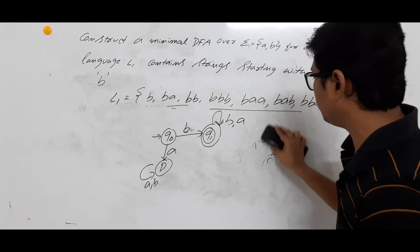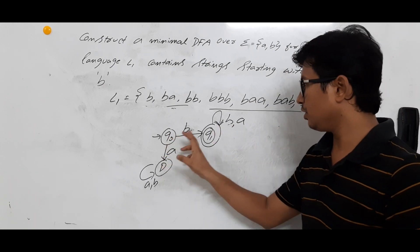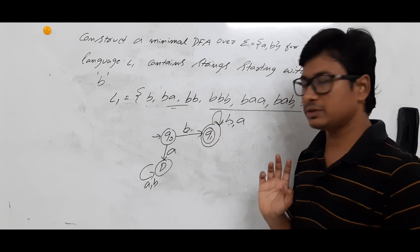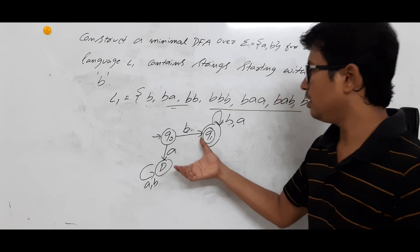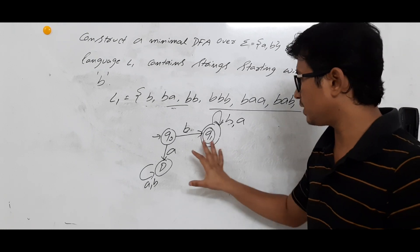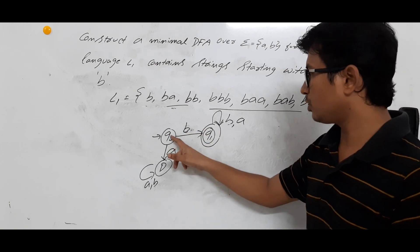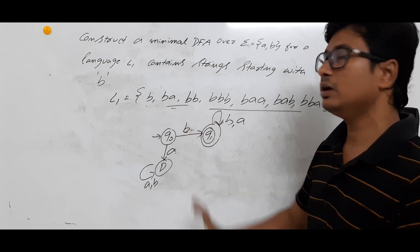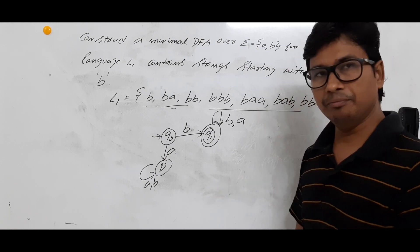Now let's check if this is a complete DFA. Q0 on A goes to D, Q0 on B goes to Q1. Q1 on A goes to Q1, Q1 on B goes to Q1. From D on A we go to D, and from D on B we go to D. From each state, on all alphabets, we go to exactly one state. So this is a complete DFA.